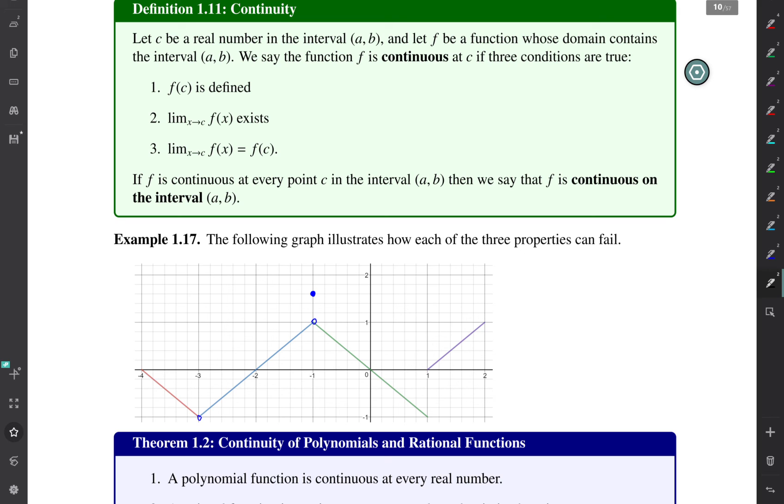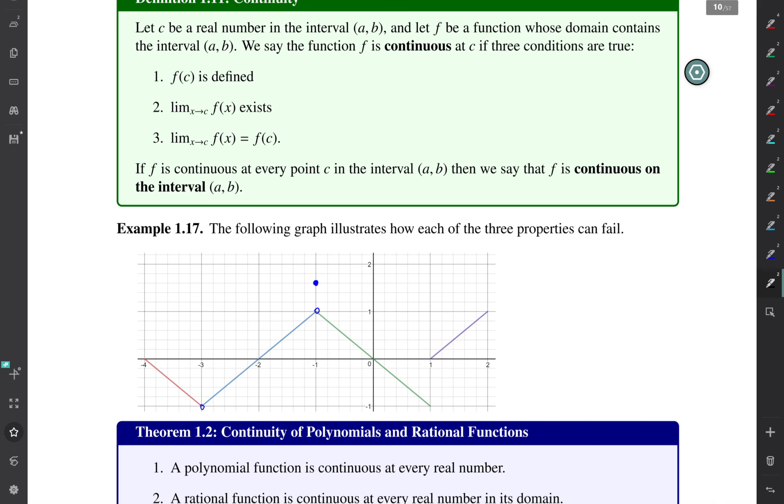So before I tell you what a continuous function is, I should give you an example of the three ways that a function can fail to be continuous. And so in Example 1.17, I have highlighted the three ways a function can fail to be continuous.